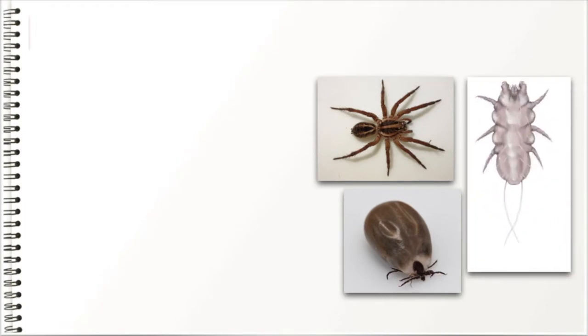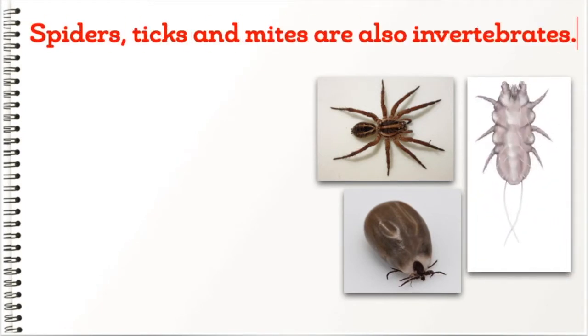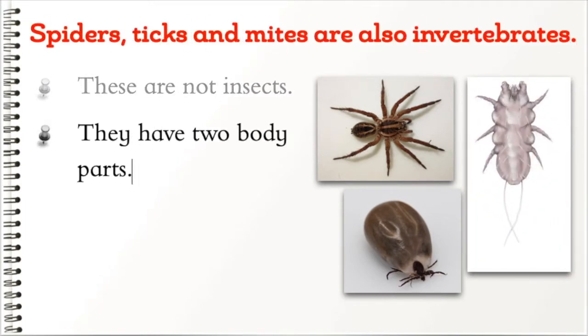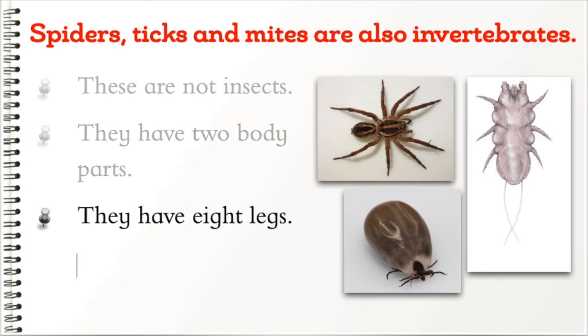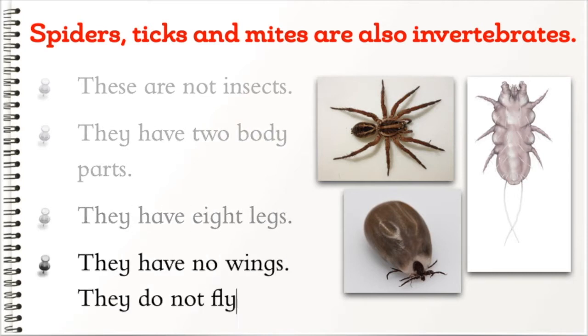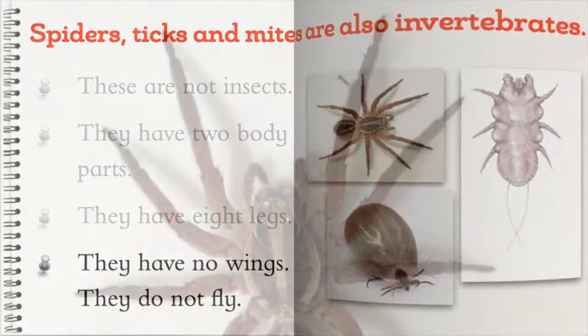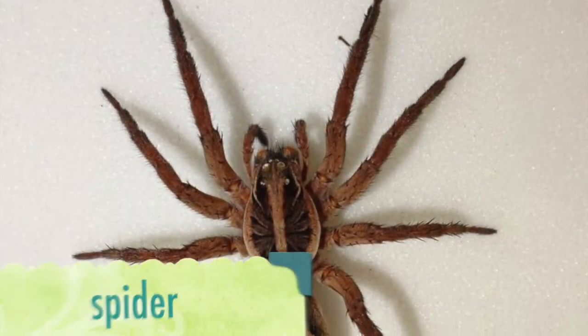Spiders, ticks, and mites are also invertebrates, but these are not insects. They have two body parts and eight legs. They have no wings and do not fly.